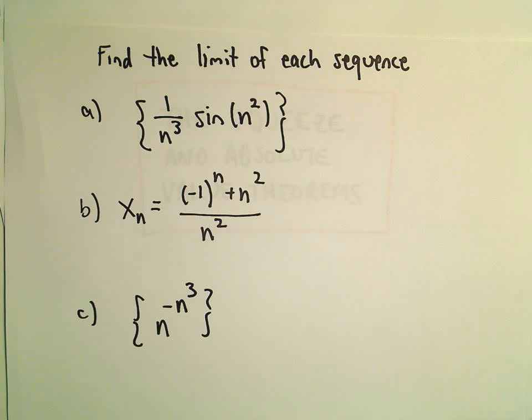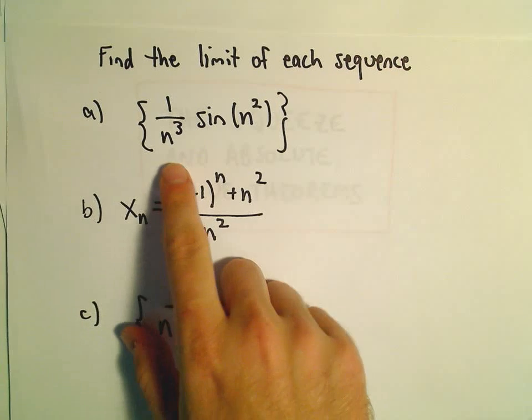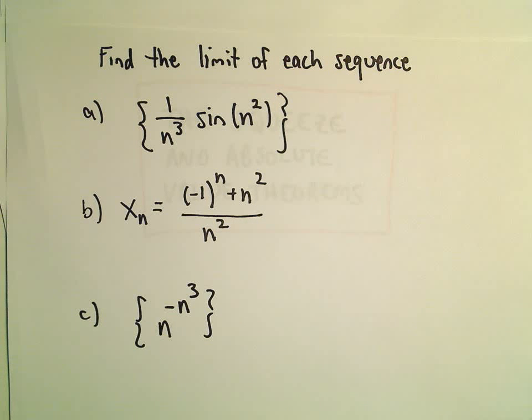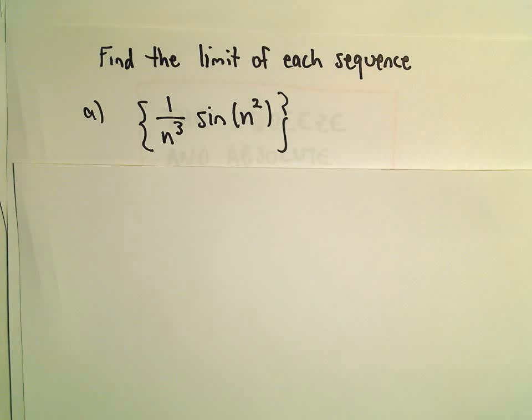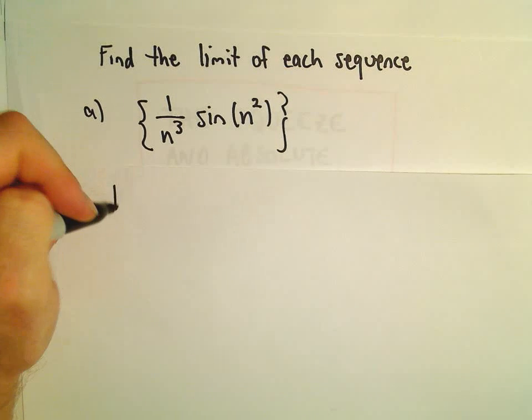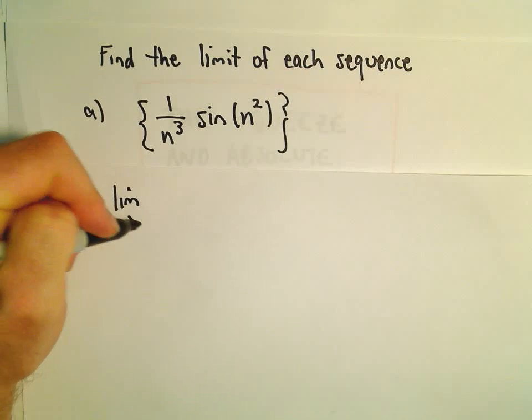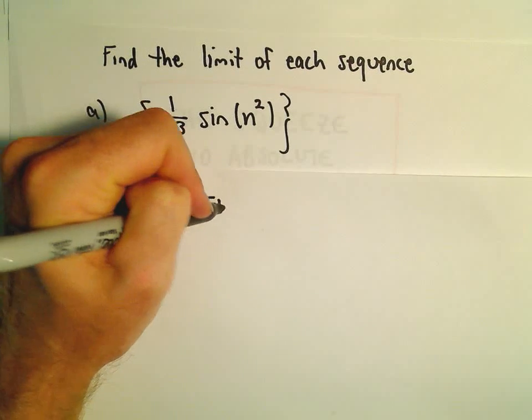So in part A here, we're going to find the limit of a sequence 1 over n cubed times sine of n squared. Again, what we're trying to do is take the limit as n goes to infinity of this function.